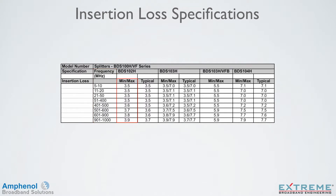Next to that is the column labeled min-max. These are the worst case loss numbers for these devices, and are normally used by engineers and designers of cable systems. The column next to that is labeled typical. These are the specification numbers that you typically see from the majority of these devices in the field. Notice that the insertion loss at 5 MHz is 3.5 dB and 3.7 dB at 1 GHz. Over the entire frequency band, it only loses two-tenths of a dB. Most passive devices have minimal loss across the frequency band, and that's why we refer to them as flat loss devices.